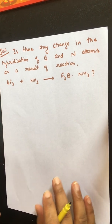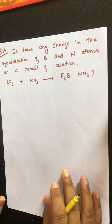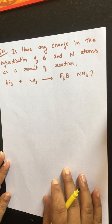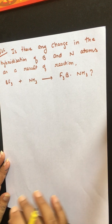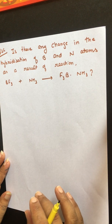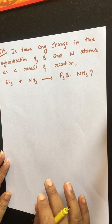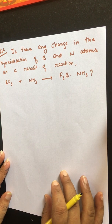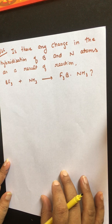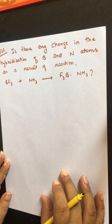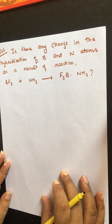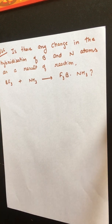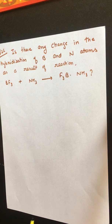This is question number 26 of the NCERT exercise: is there any change in hybridization of boron and nitrogen atom as a result of the reaction when BF₃ reacts with NH₃ to give BF₃·NH₃? First, we will consider the hybridization of boron in BF₃ and nitrogen in NH₃.